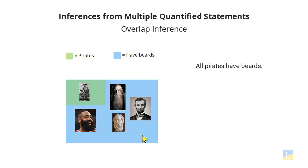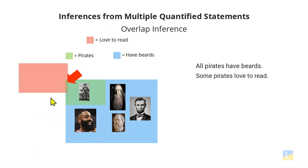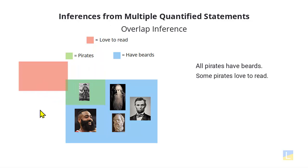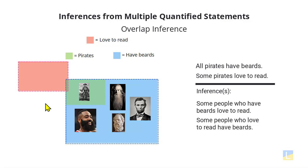Now we learn another fact: some pirates love to read. On the LSAT, "some" means at least one, so at least one of these green pirates falls into the group of people who love to read. It's possible that most or even all pirates love to read, but at a minimum there's at least one. Notice that in this situation there's an overlap between the beard group and the love-to-read group. That's why we can conclude that there must be at least one person who has a beard who loves to read — some people who have beards love to read, and some people who love to read have a beard.